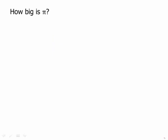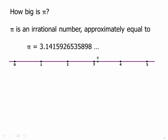How big is pi? Well, pi is an irrational number approximately equal to 3.14159265358... In fact, that decimal goes on forever. There's no repeating pattern. It just goes on forever.